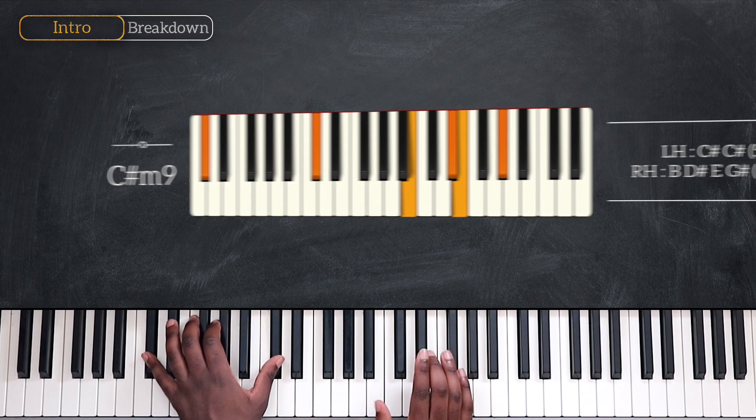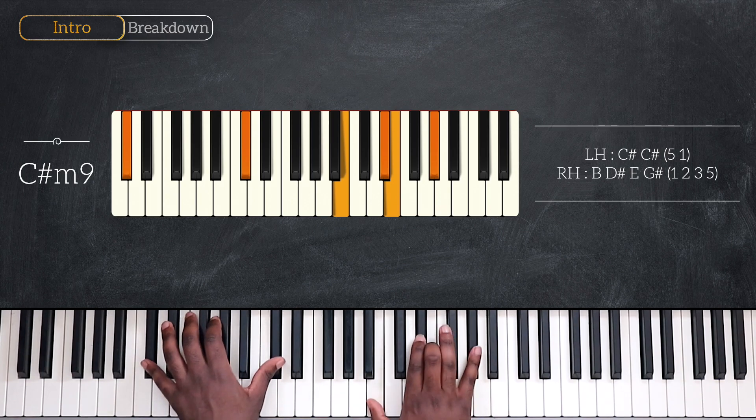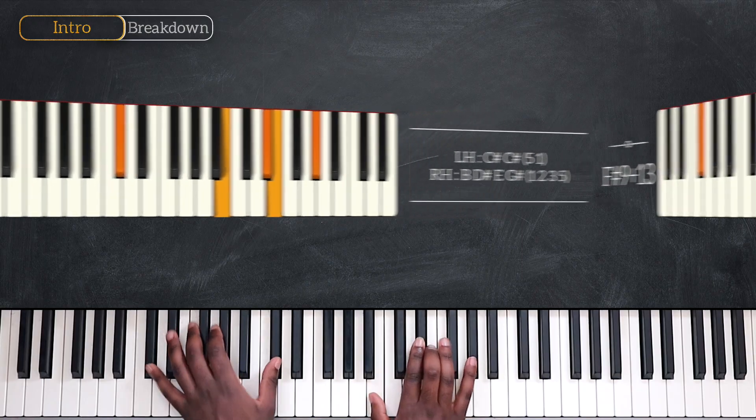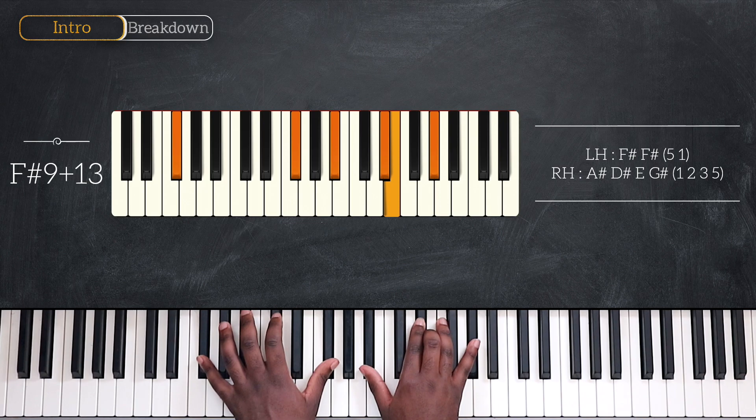We have C-sharp minor nine, with octave C-sharp, B, D-sharp, E, and G-sharp, then F-sharp nine add 13, octave F-sharp, A-sharp, D-sharp, E, and G-sharp on top.